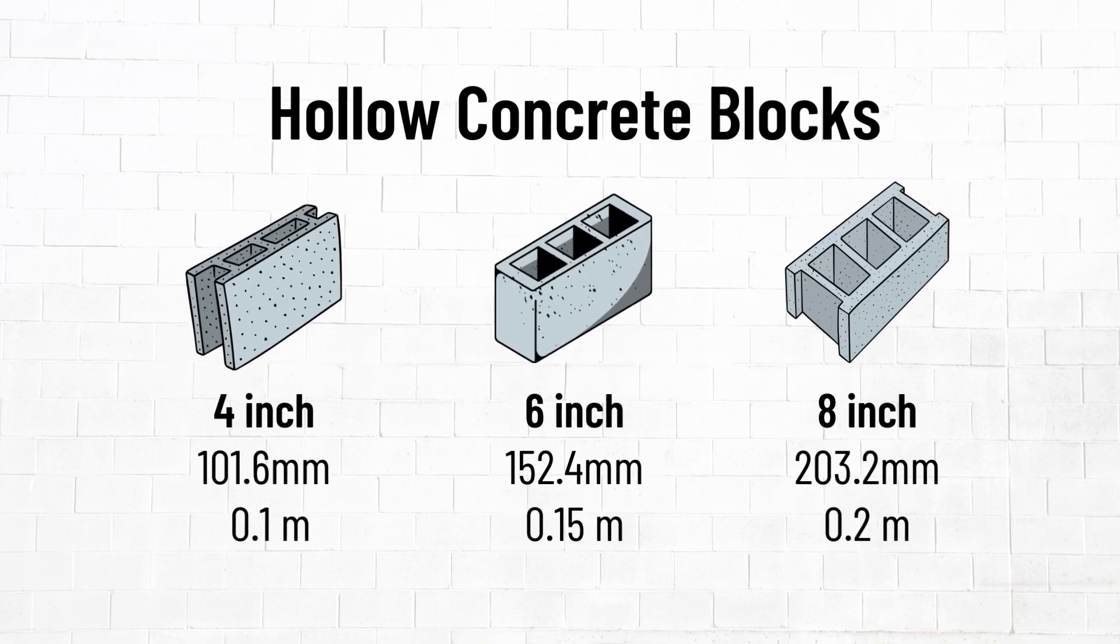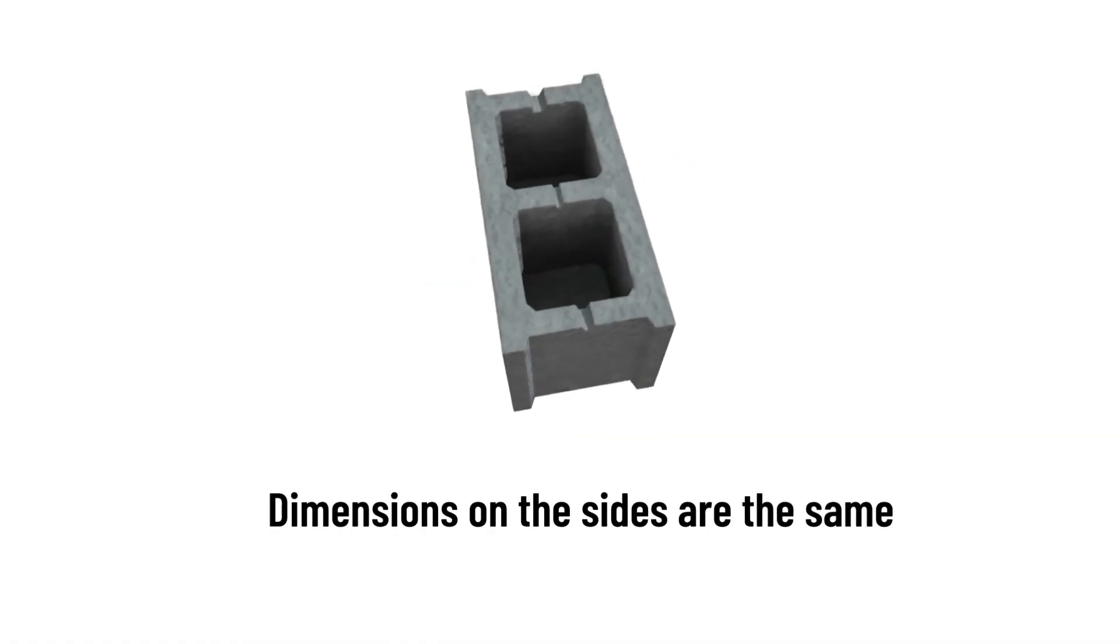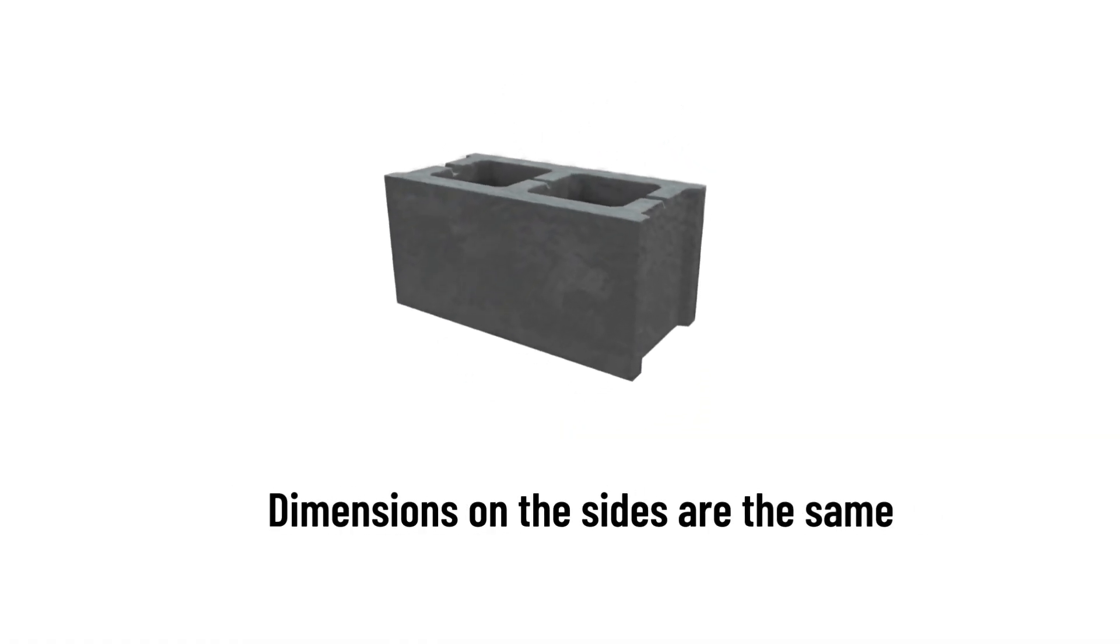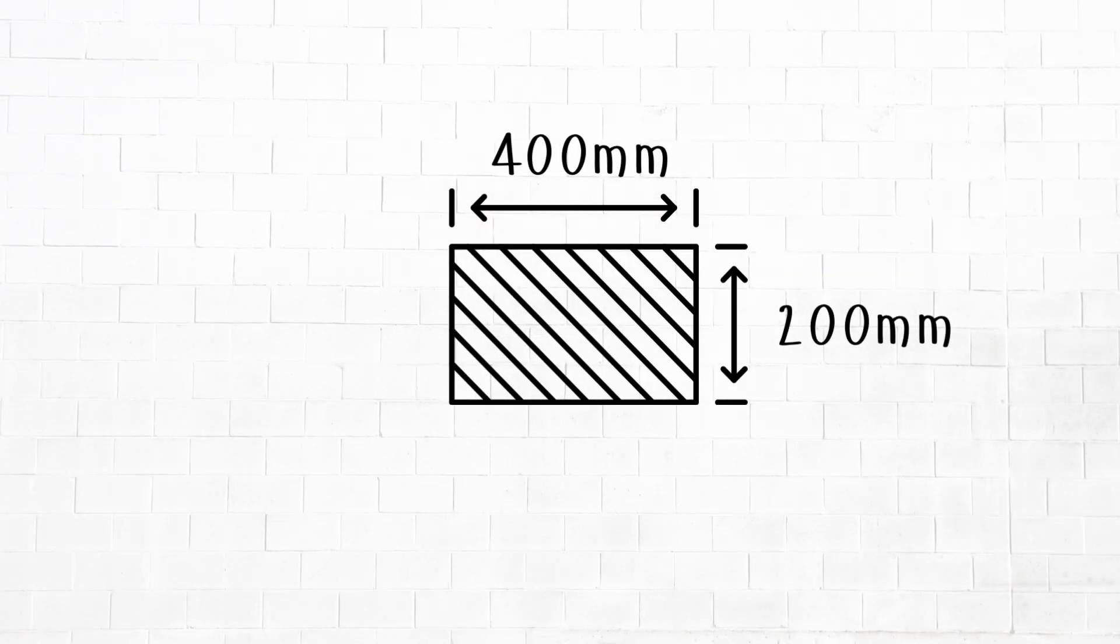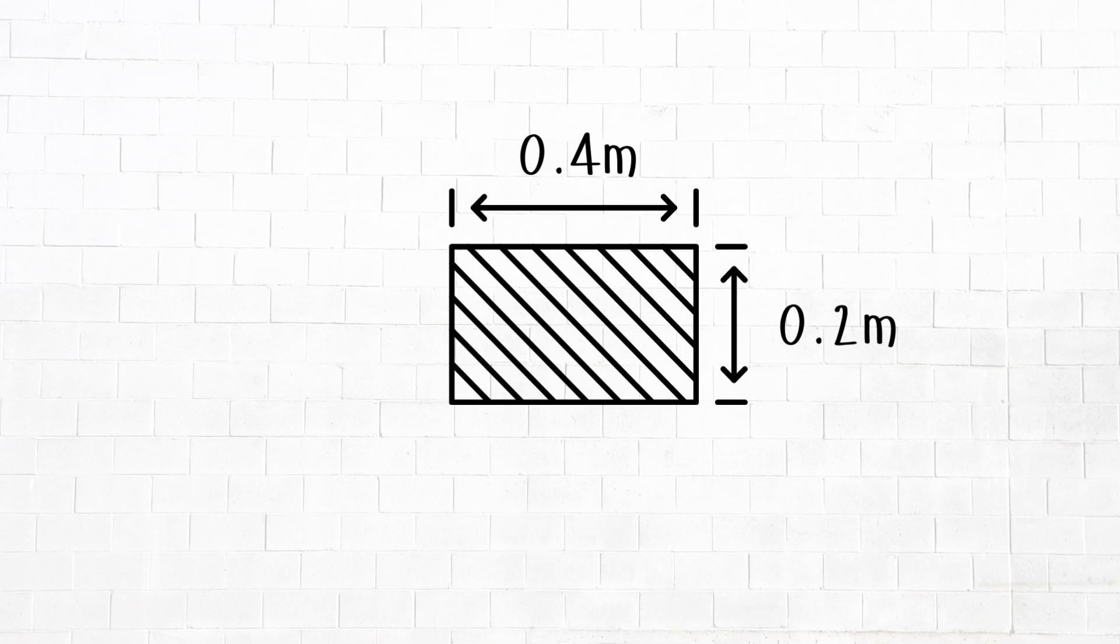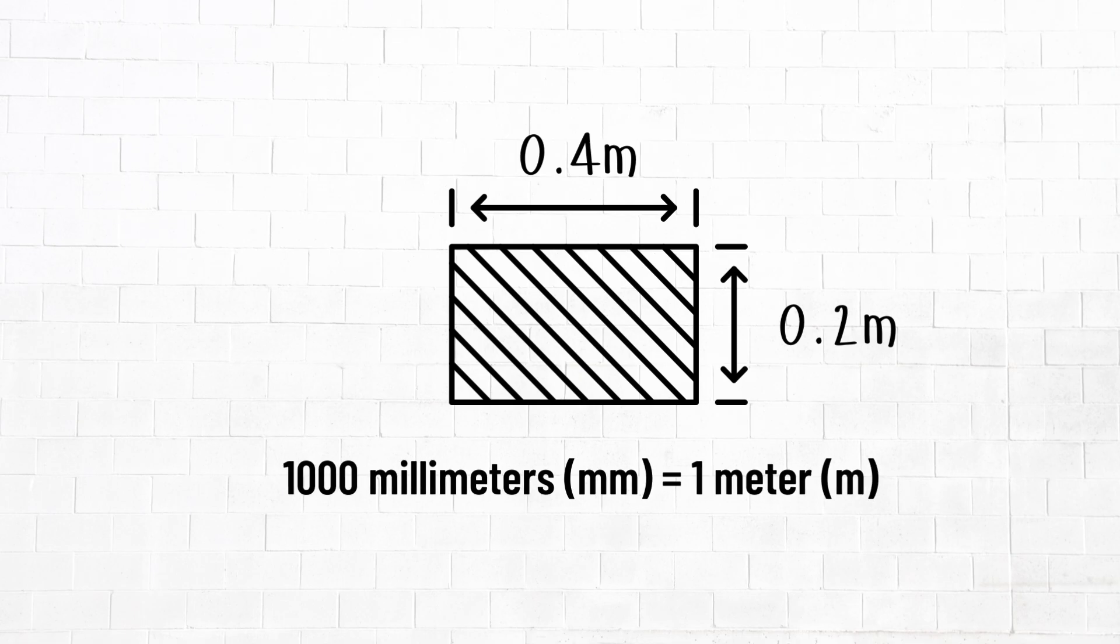The only difference in appearance between these blocks is the thickness. However, the dimensions on the side are pretty much the same and we'll simplify the size of a block to 400 millimeters long by 200 millimeters deep, or 0.4 meters by 0.2 meters. Remember there are 1000 millimeters in one meter and we're going to convert everything in meters to simplify our work.